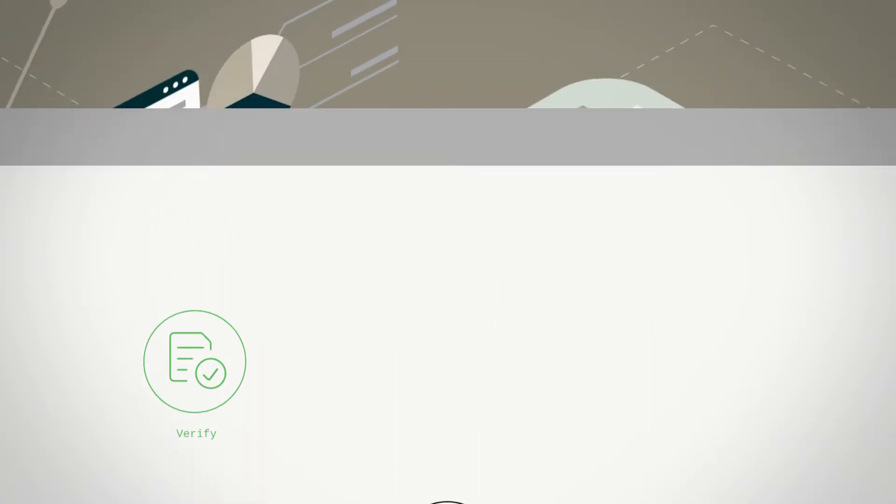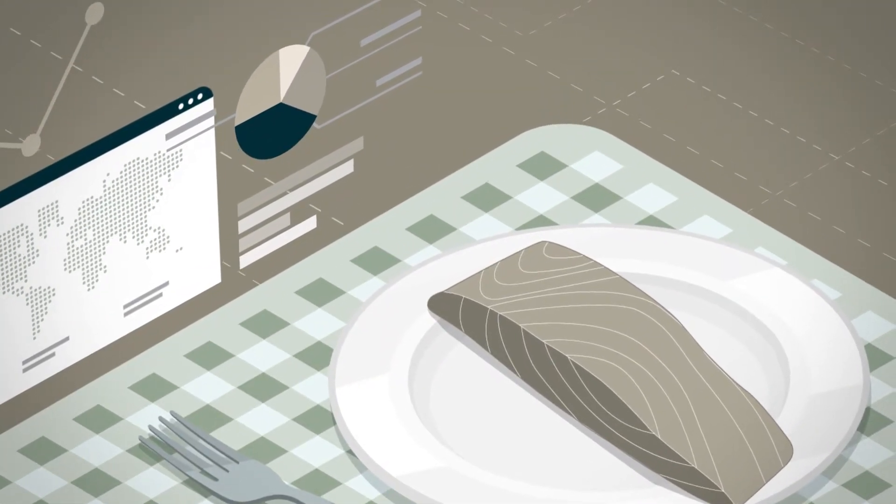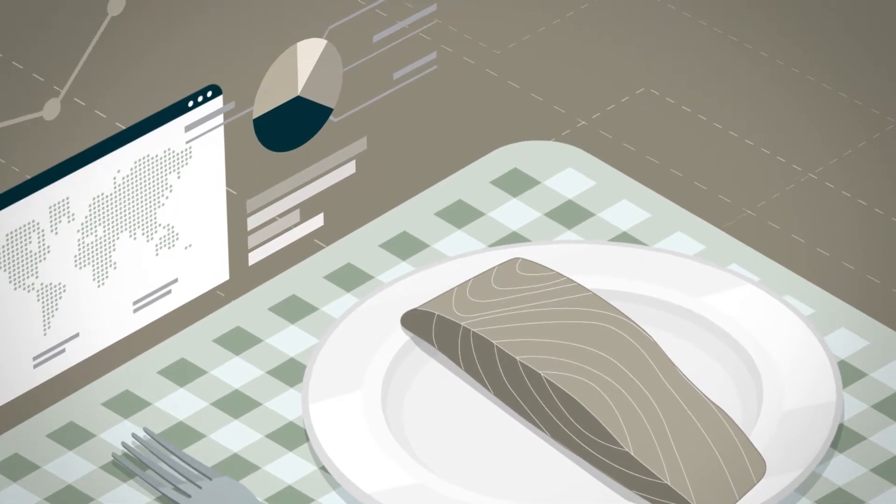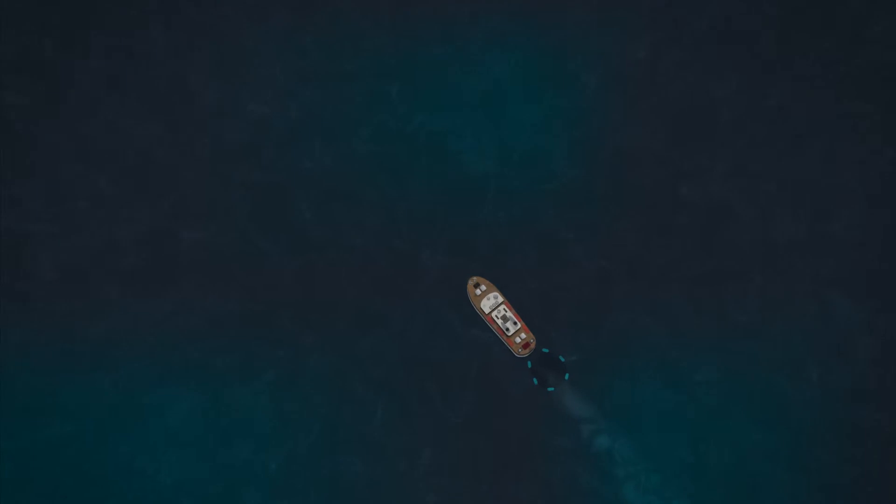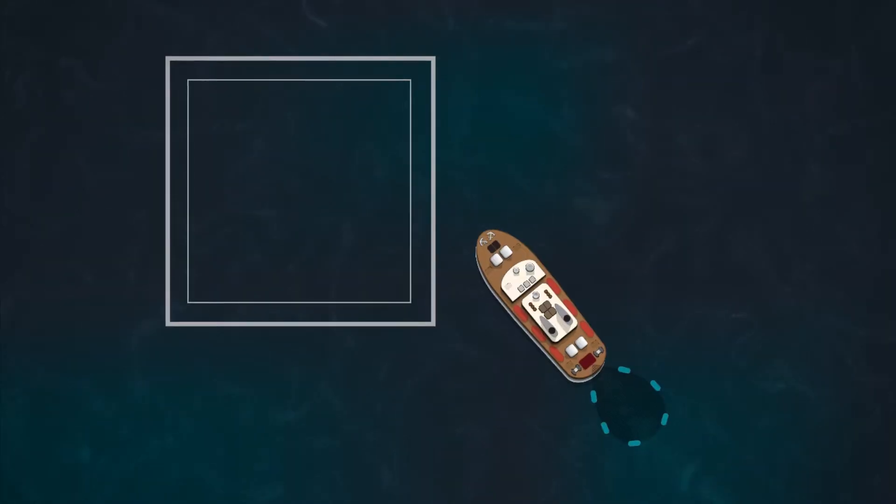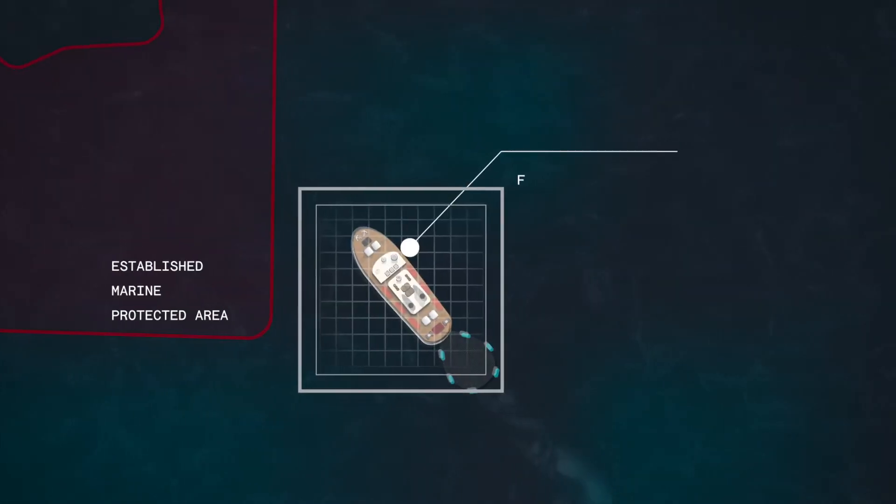OpenSC works with certification schemes to help business and consumers verify claims about sustainable and ethical production. For example, much of the world's seafood is caught illegally in protected areas or by unregistered vessels.